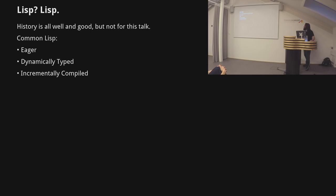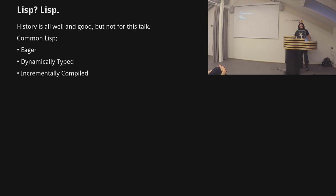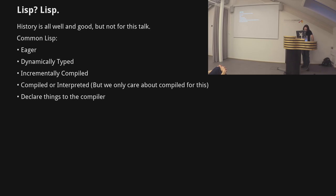We're talking about Common Lisp. What it is nowadays is an eager, dynamically typed, incrementally compiled language. That last one is the important thing for live coding — you can recompile just a class, or a function, or a variable, and the effects are immediate at runtime. That's really handy especially if you want to do live coding of GPU stuff. The spec allows it to be compiled or interpreted, though the only versions we use are all compiled.